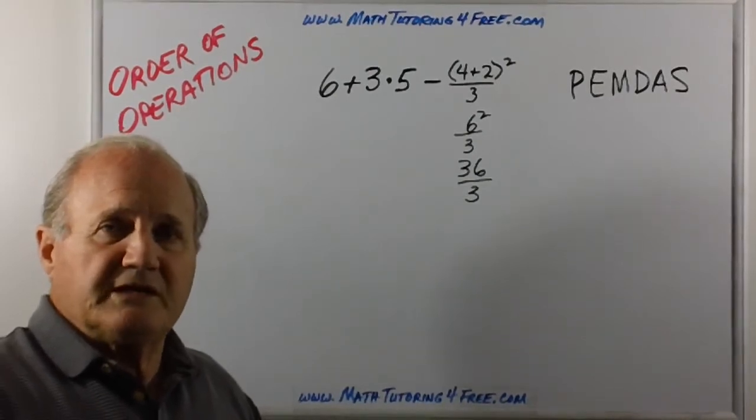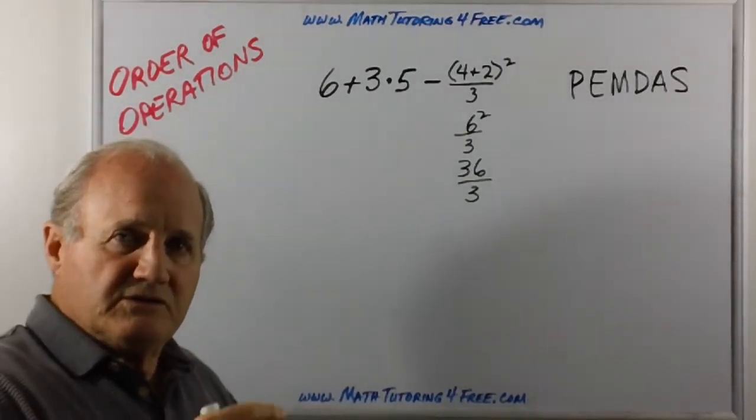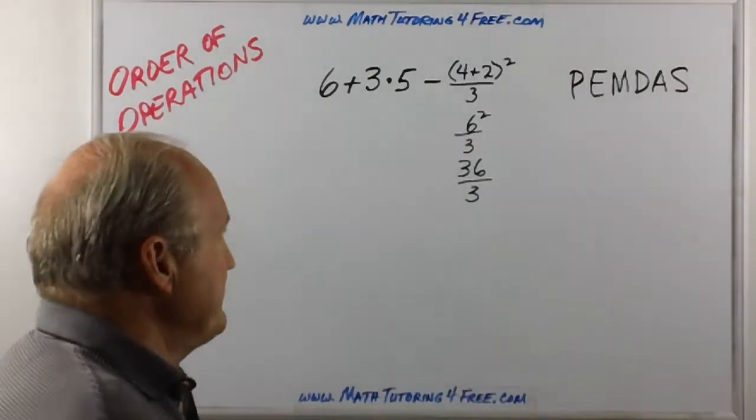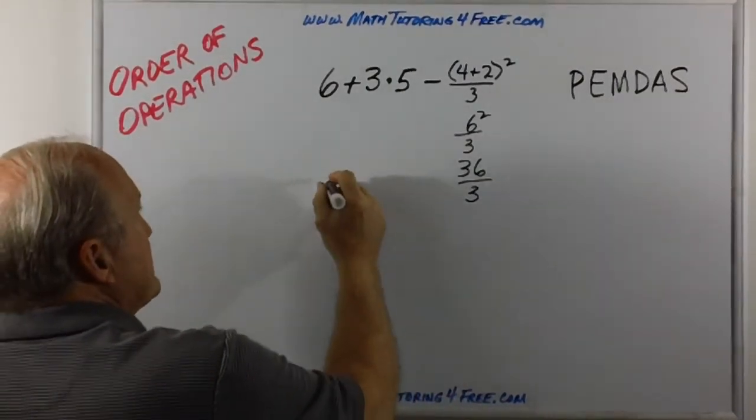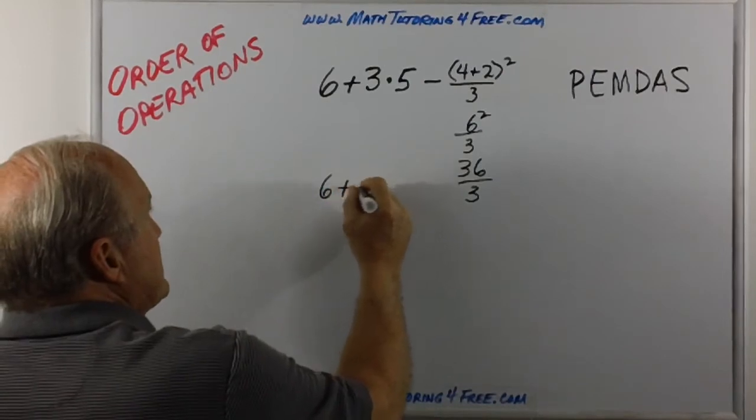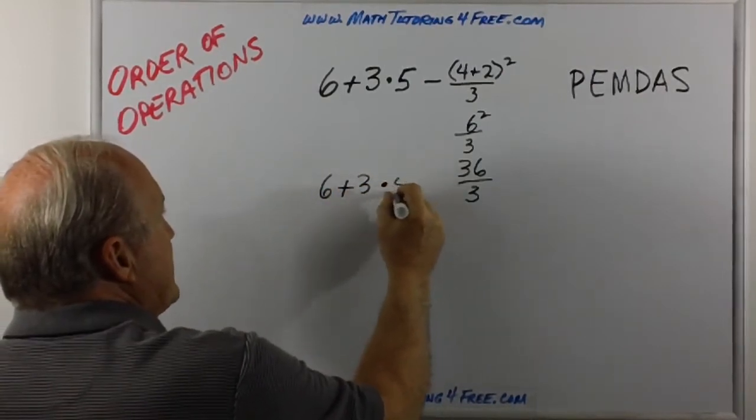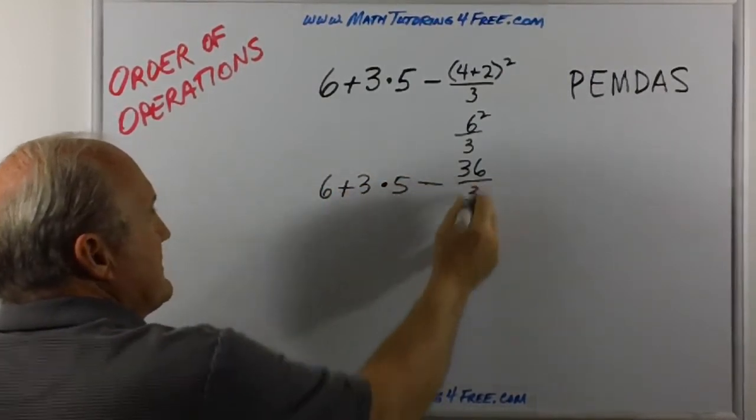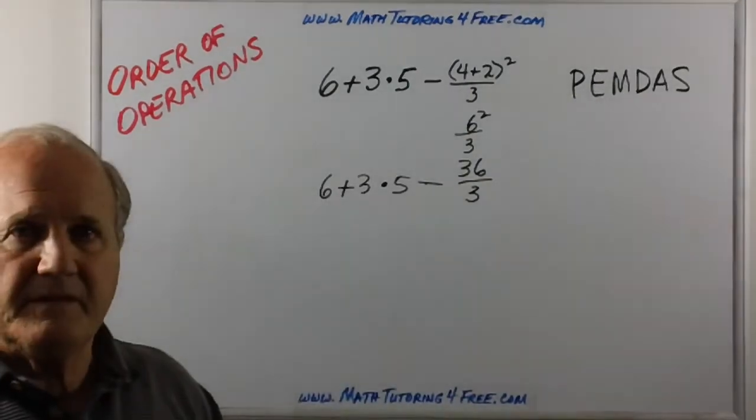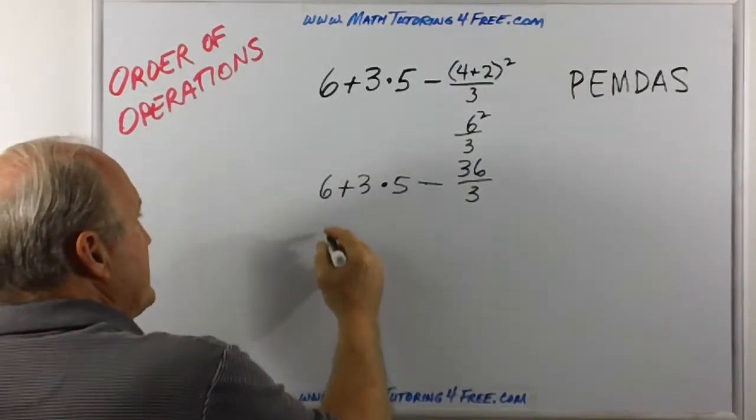we do any multiplication and division, and usually we do that left to right. So our equation at this point is six plus three times five minus 36 over three. Let's do our multiplication first.